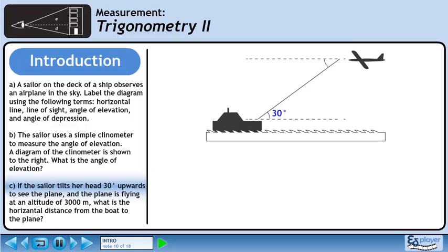Now we'll move on to part C. If the sailor tilts her head 30 degrees upwards to see the plane, and the plane is flying at an altitude of 3000 meters, what is the horizontal distance from the boat to the plane?